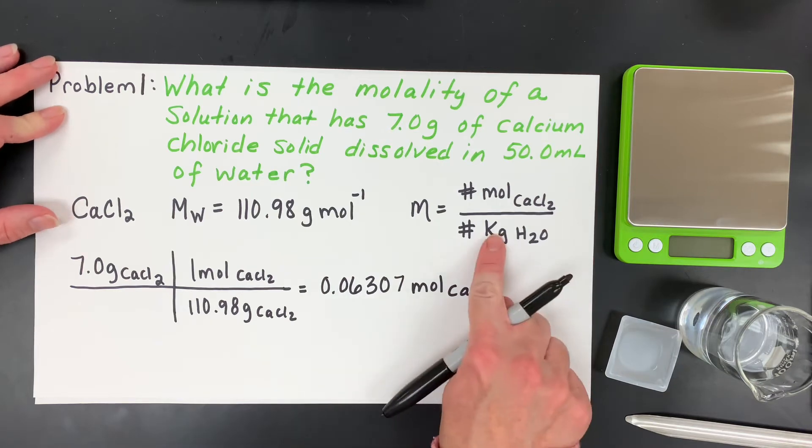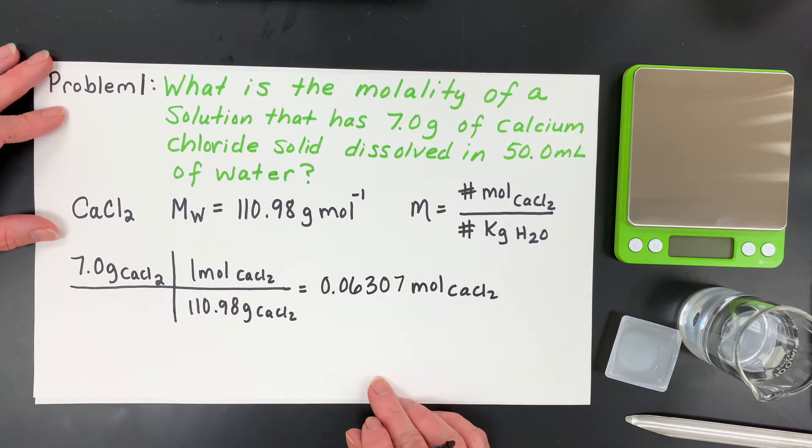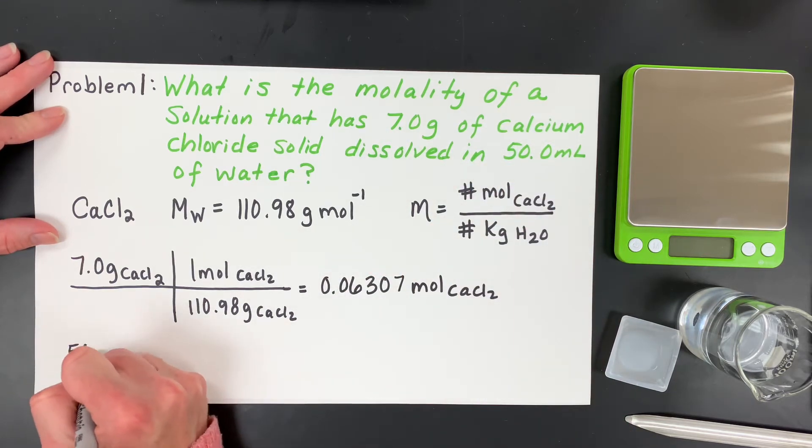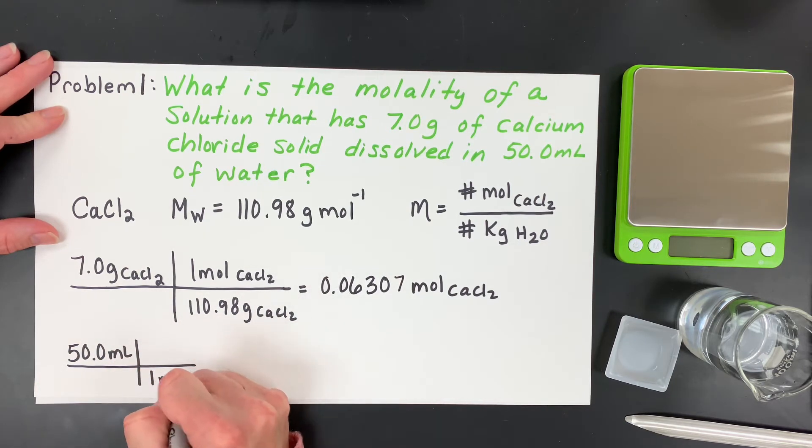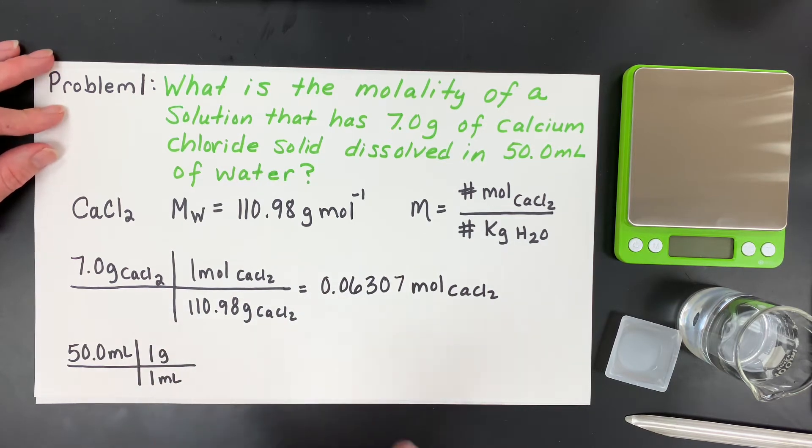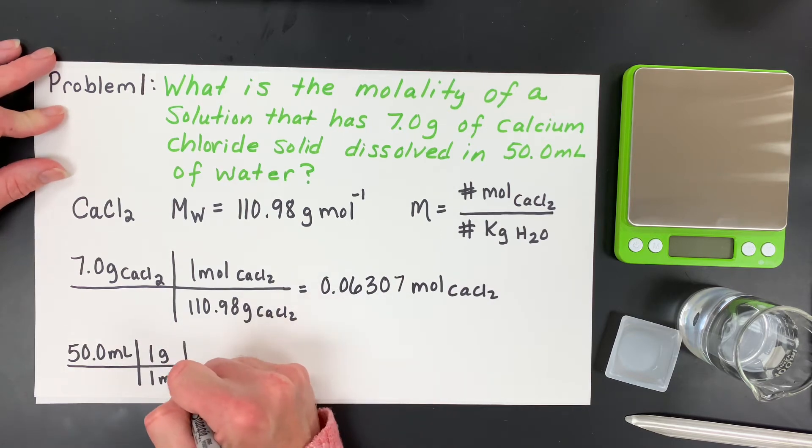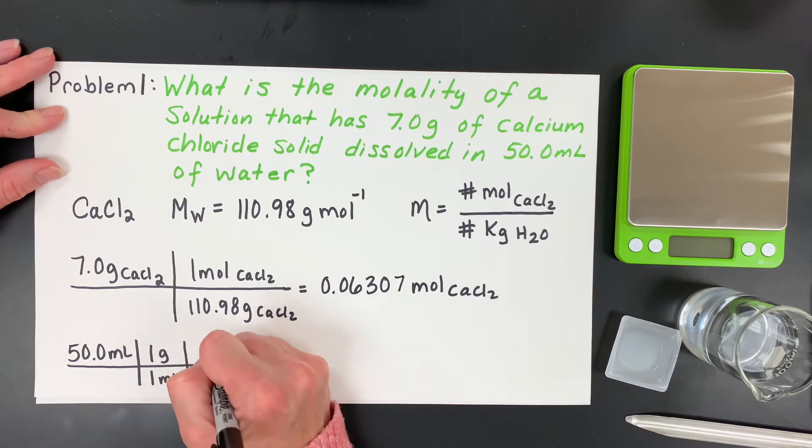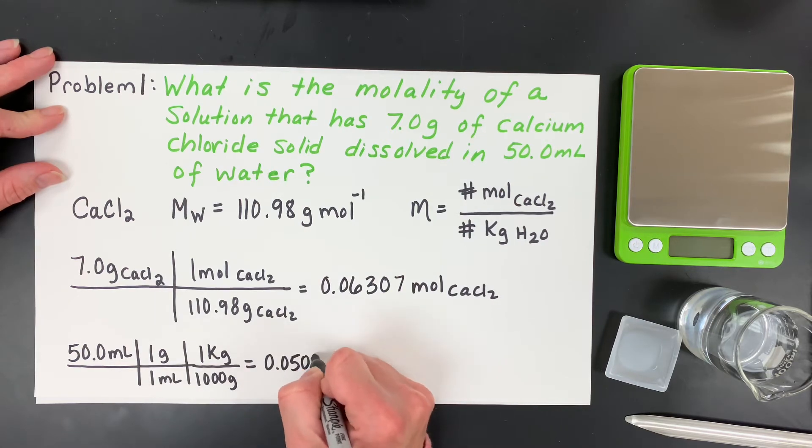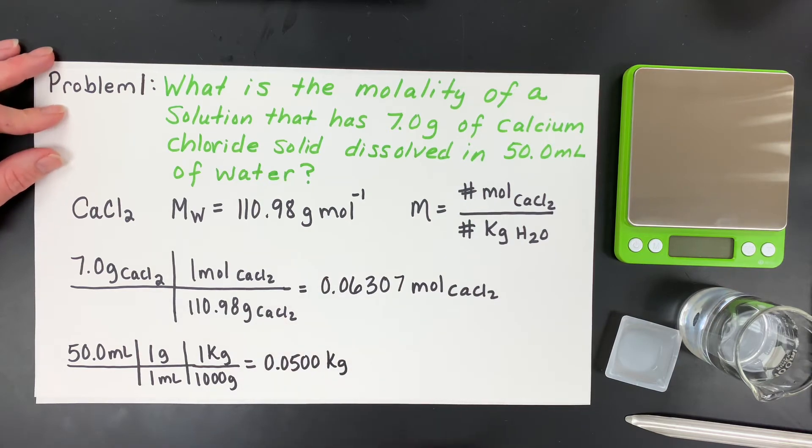Now, I need to find the kilograms of my solvent. I have 50 milliliters. At room temperature, it's a common fact that for every one mil, water weighs about one gram. So that's the density of water. At room temperature, one mil equals about one gram. Then I need to turn that into kilograms, so I take 1,000 grams is one kilogram. So I get 0.05, and if I keep those extra zeros for significant figures of the solvent, I have its kilogram amount.